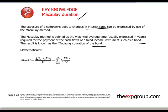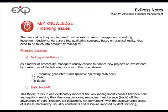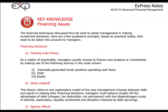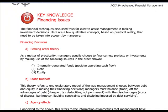Macaulay duration is yet another example of the rather big diversity found in paper P4. Therefore, you need to start early in order to master the key concepts in this paper. With regard to financing issues, the pecking order theory was covered in paper F9, so it's probably a good time to blow the dust off your F9 notes and review them briefly, because a lot of F9 is relevant for paper P4.